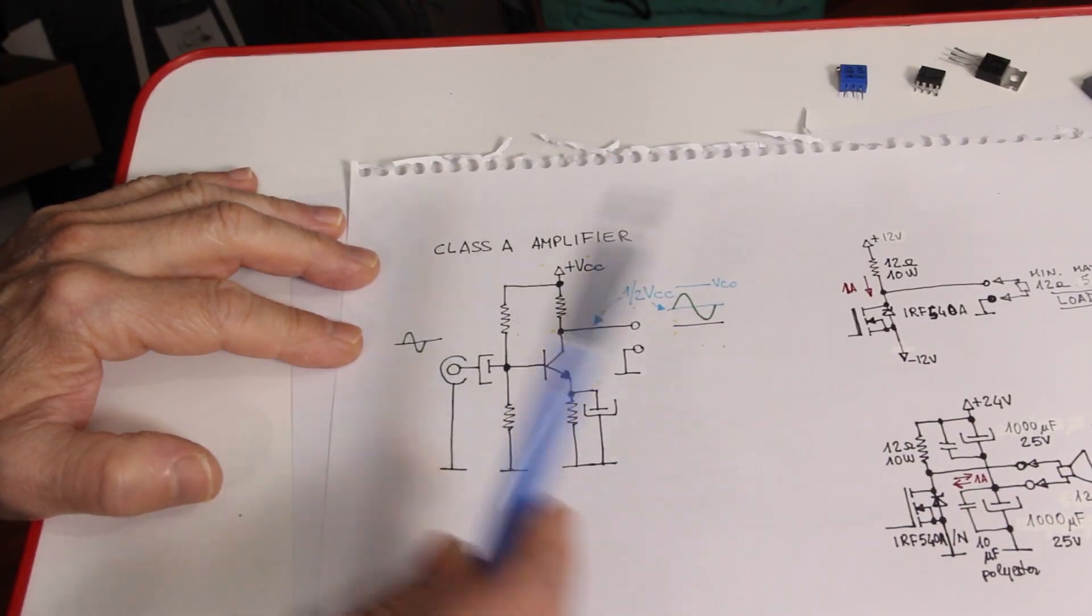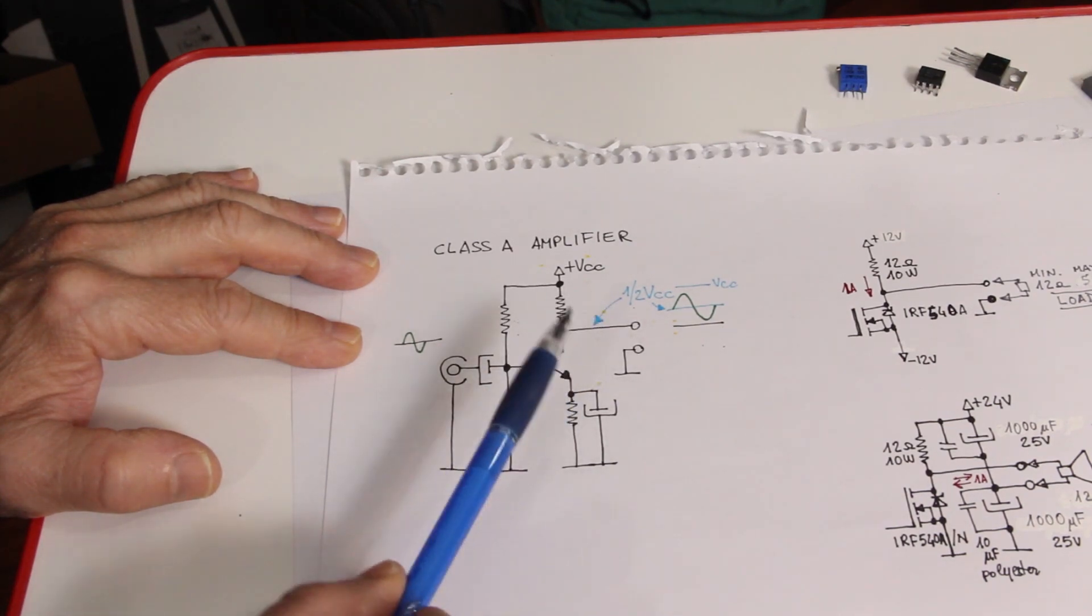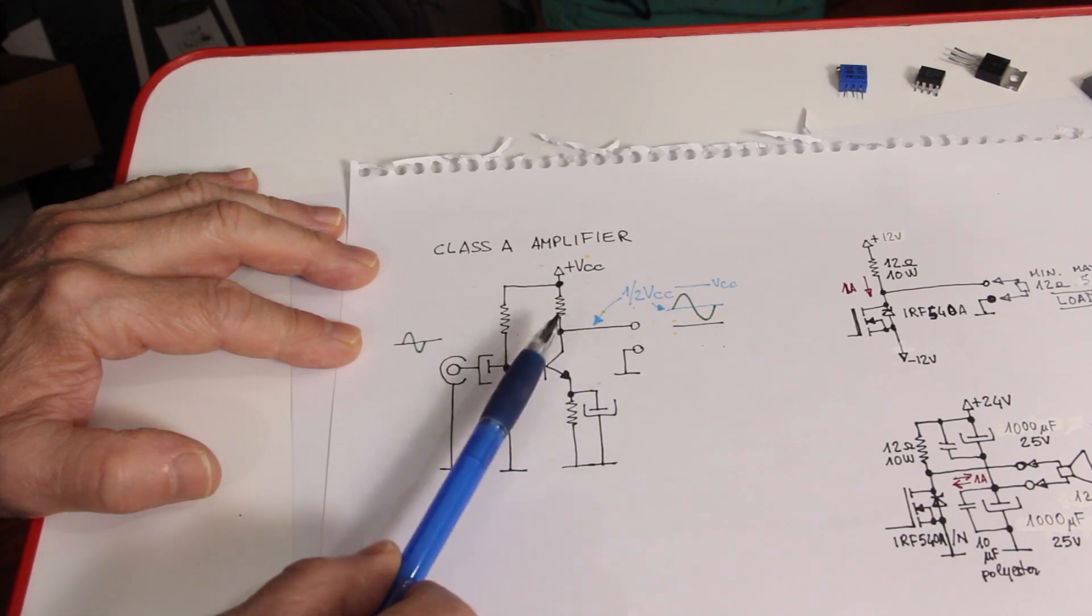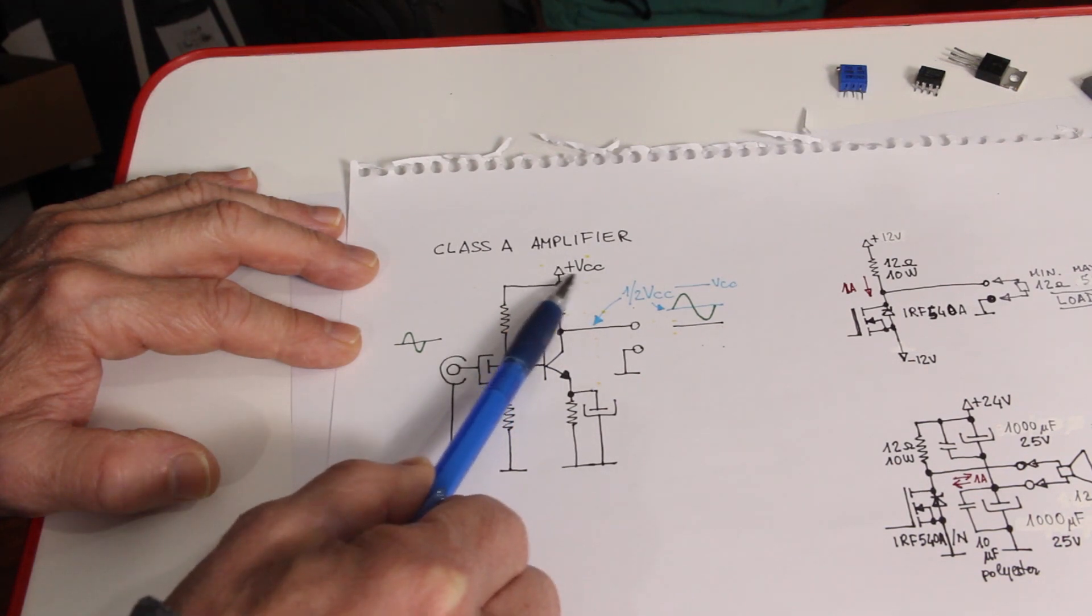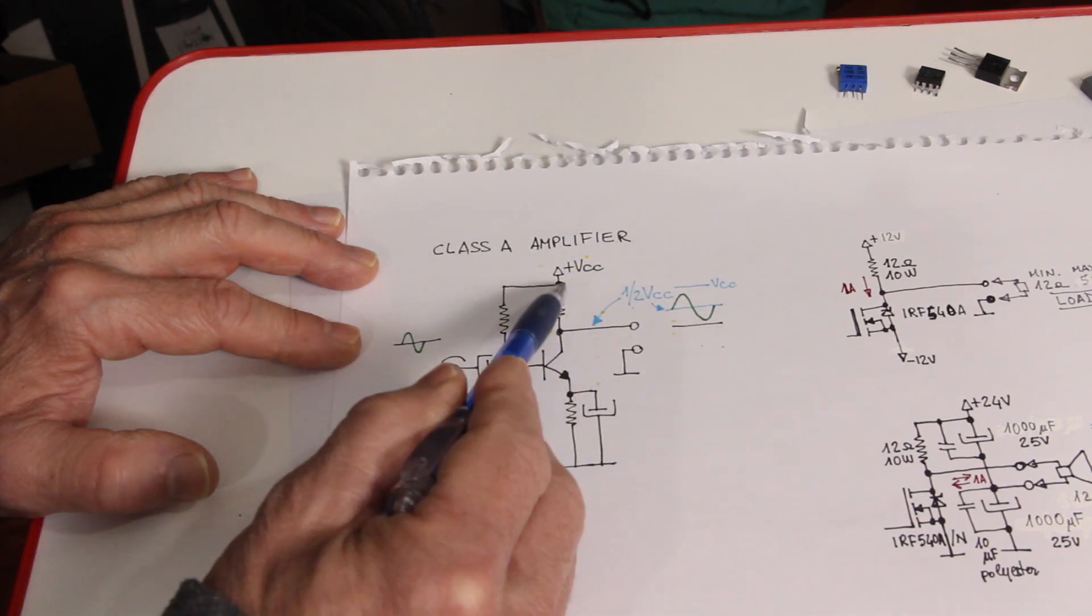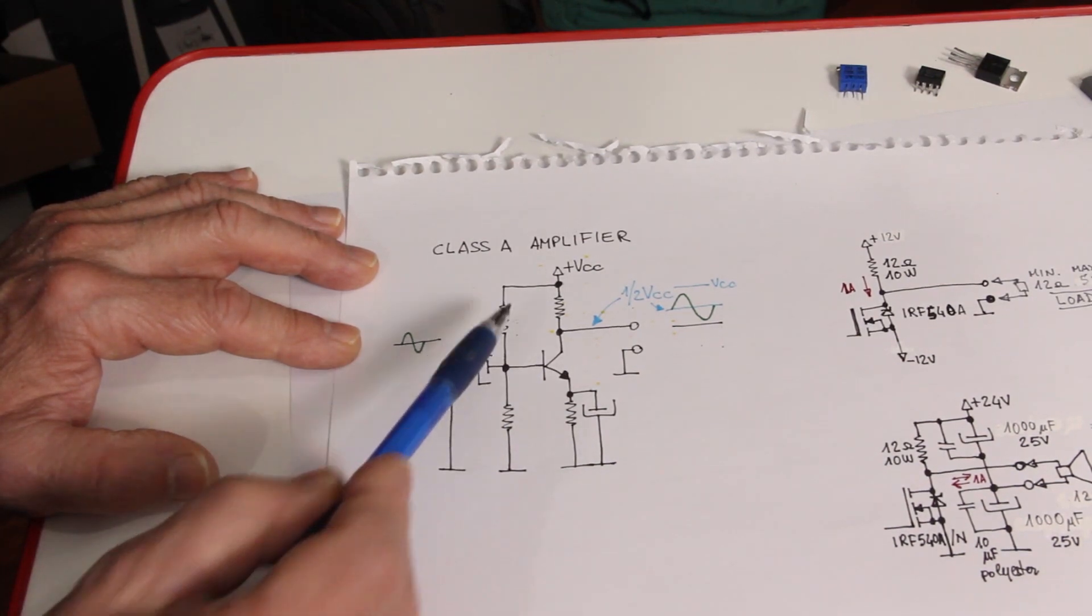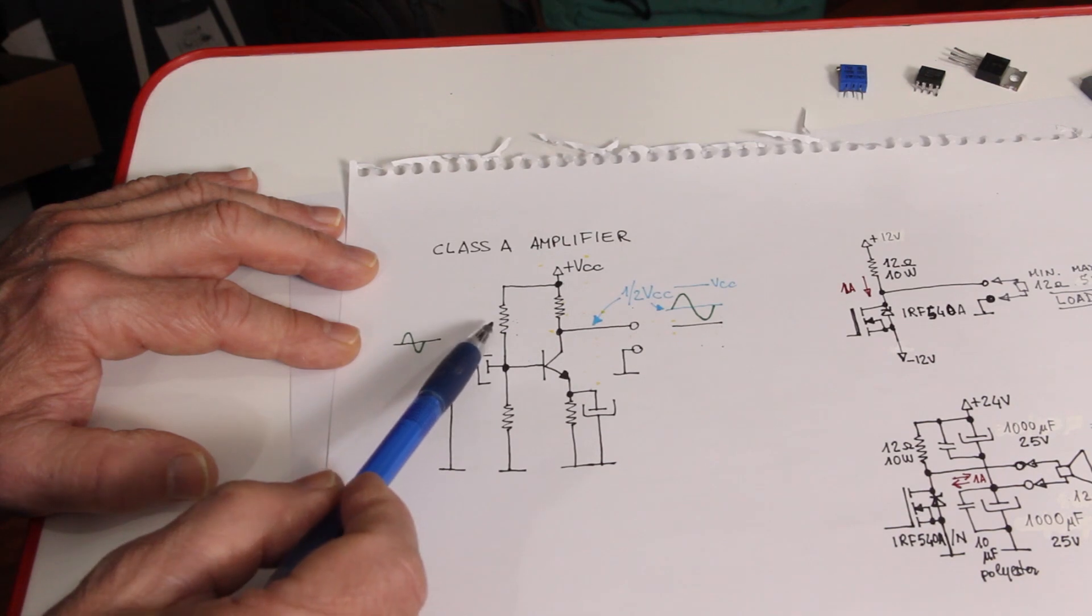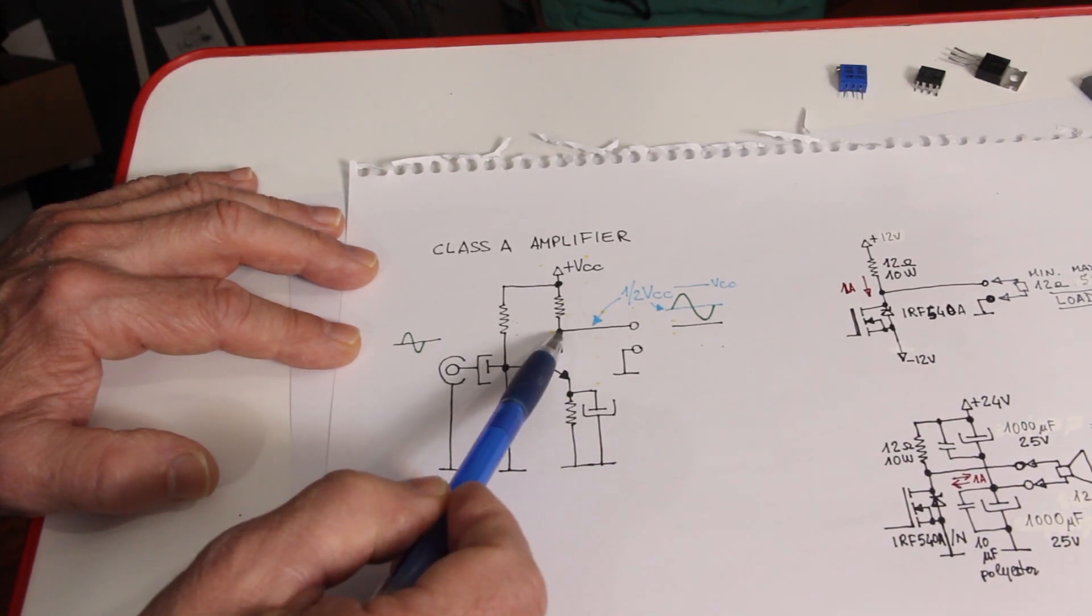This is the classical Class A amplifier made with BJT, and what characterizes a Class A amplifier is that this point, that is the output of the signal, is set to be at half of the voltage of the supply voltage here. So for example, if we have 12V here, here we need to set this point to 6V, and to set this point to 6V we need to change these two resistors so that the bias of the transistor is centered in a way that here we have 6V.